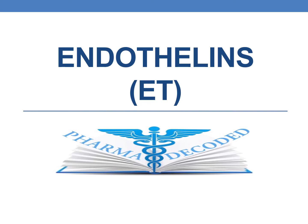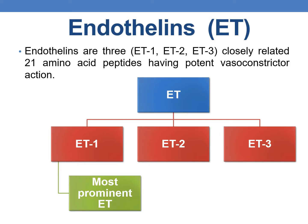Endothelins are three closely related 21 amino acid peptides having potent vasoconstrictor actions. They are mainly ET1, ET2, and ET3. ET1 is the most prominent endothelin.